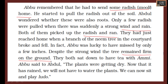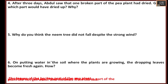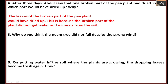After three days, Abdul saw that one broken part of the pea plant had dried. The leaves of the broken part of the pea plant would have dried up because that part did not get water and minerals from the soil.